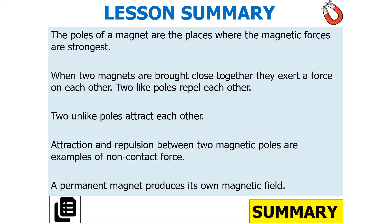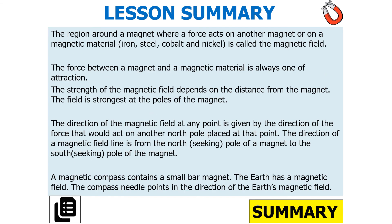Let's summarize what we've learned in today's lesson. The poles of a magnet are the places where the magnetic forces are strongest. When two magnets are brought close together they exert a force on each other — two like poles repel, two unlike poles attract. Attraction and repulsion between two magnetic poles are examples of a non-contact force. A permanent magnet produces its own magnetic field. The region around a magnet where a force acts on a magnet or magnetic material — such as iron, steel, cobalt, or nickel — is called a magnetic field. The force between a magnet and a magnetic material is always one of attraction. The strength of the magnetic field depends on distance from the magnet, being strongest at the poles. The direction of the magnetic field line is from the north-seeking pole to the south-seeking pole.